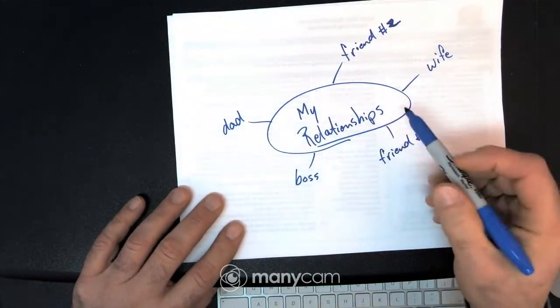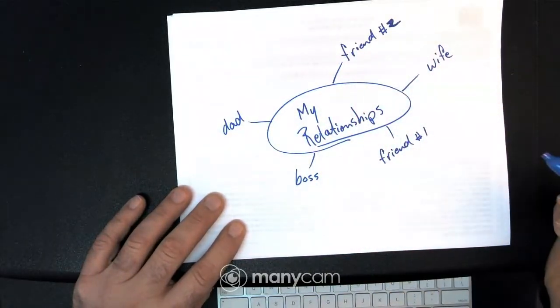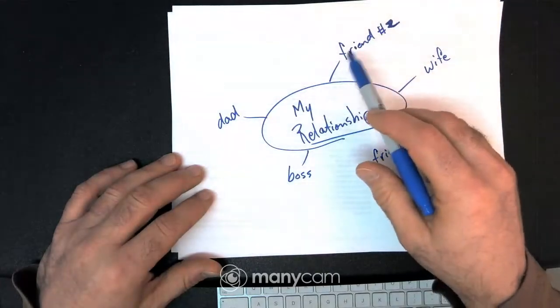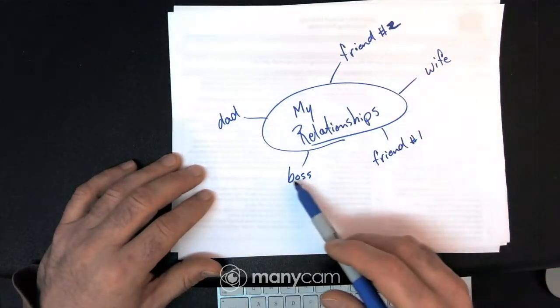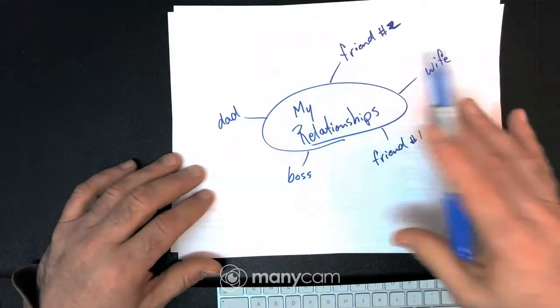The first step of this assignment is to come up with those five big relationships in your life. Now I put down, so what do I have here? Friend number two, wife, friend number one, boss, dad. So these are my big relationships in my life.